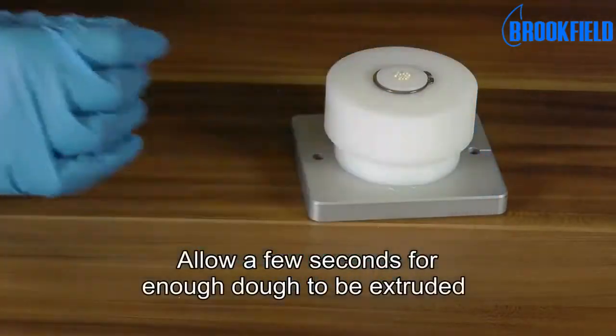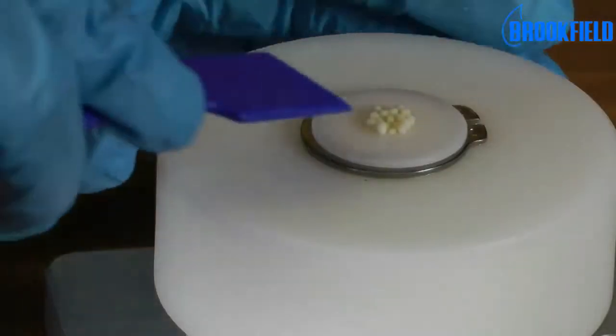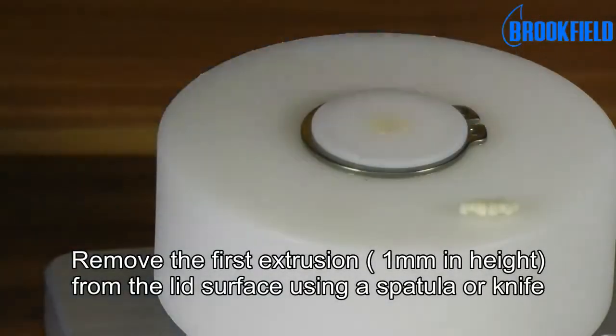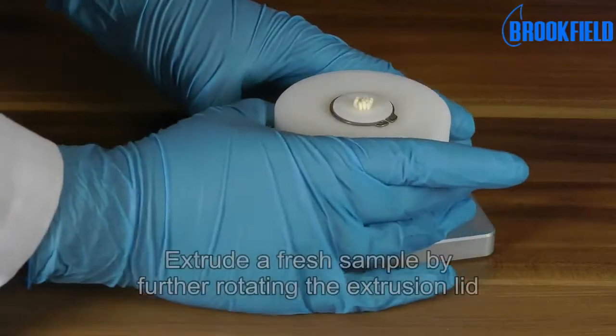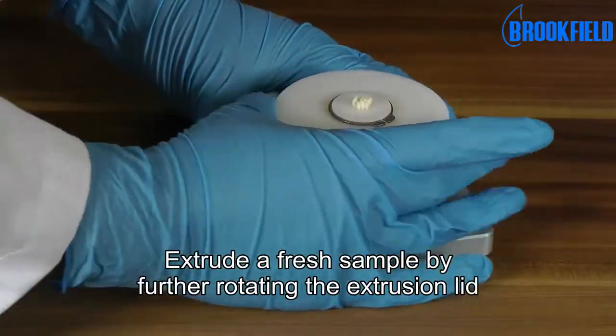Allow a few seconds for enough dough to be extruded. Remove the first extrusion from the lid surface using a spatula or knife. Extrude a fresh sample by further rotating the extrusion lid.